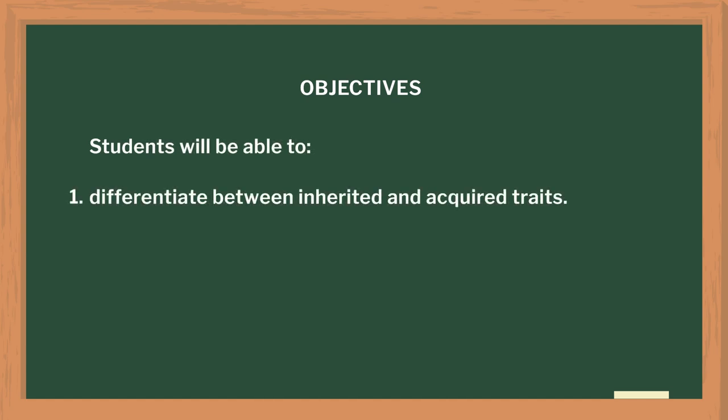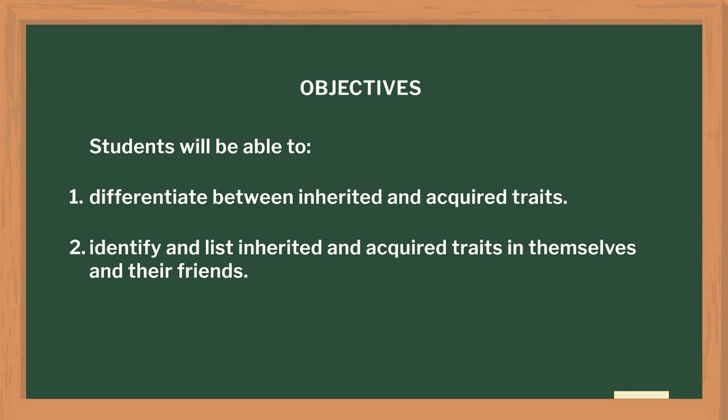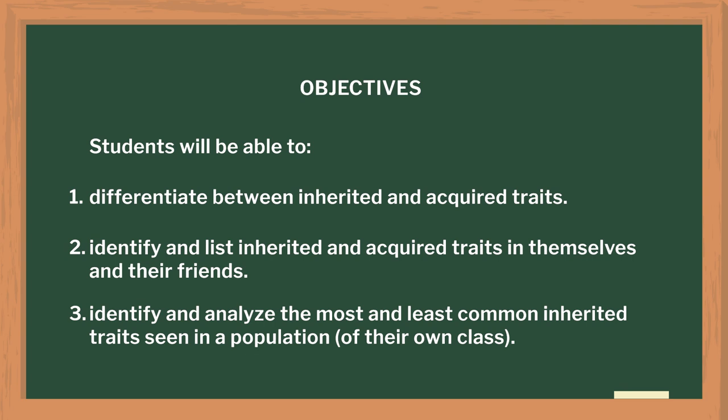I used an activity-based teaching approach for this topic. This topic is important for students to understand the basics of heredity and variation. With the activities that I performed, my students were able to not only list all the characteristics that they have as humans, but they were also able to differentiate between acquired and inherited traits, and identify which is the dominant trait in a given population — using their own class as a population. So, let us begin.